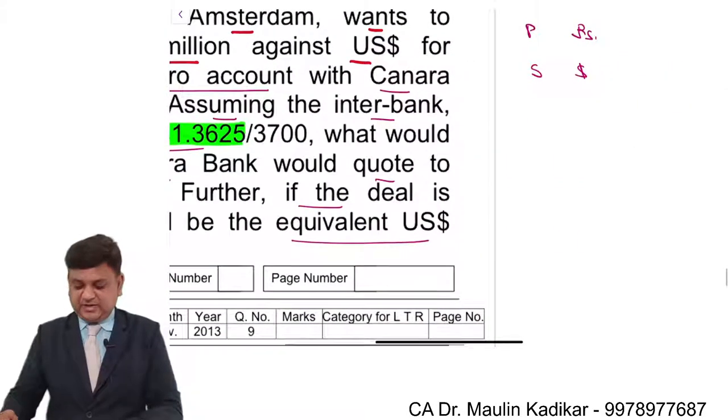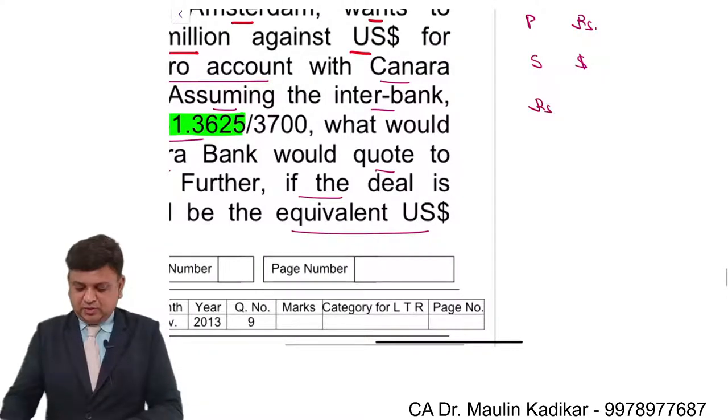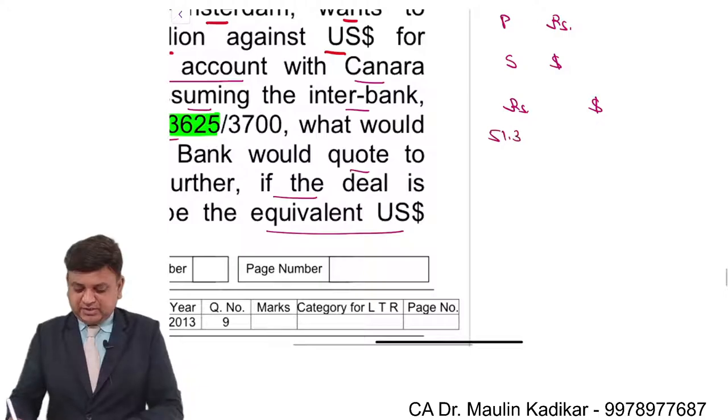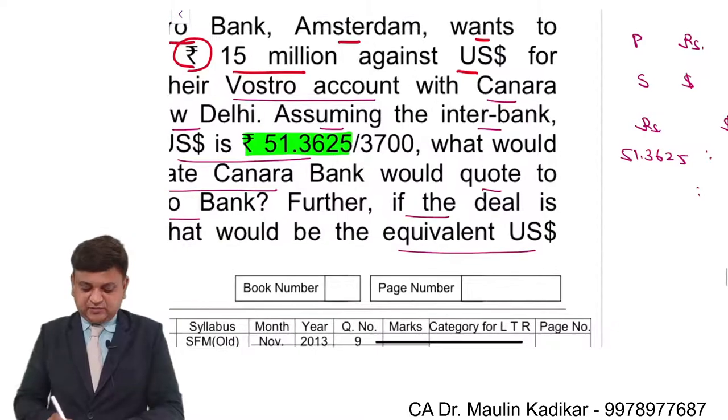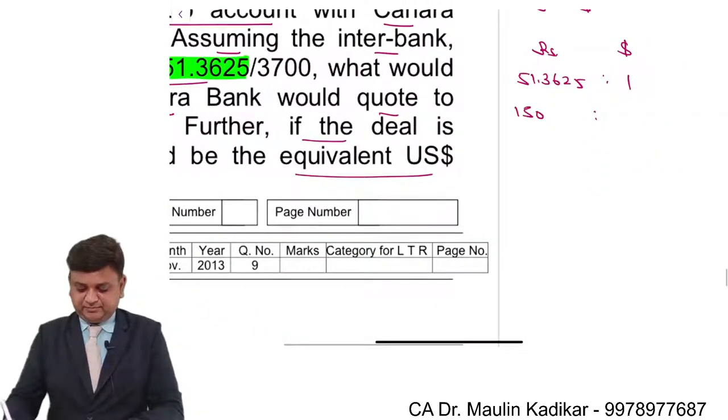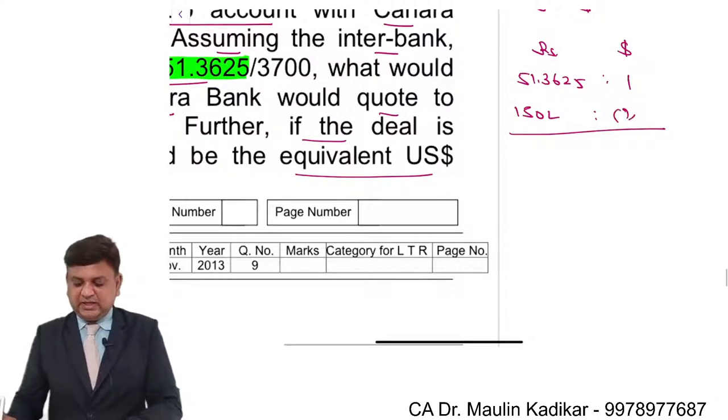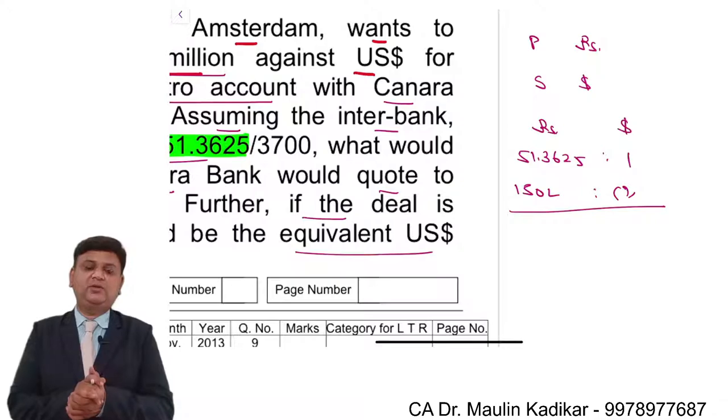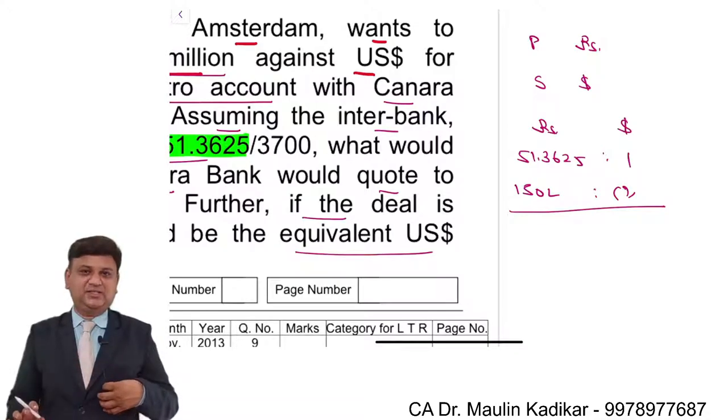The answer is very simple. First of all, rupees and dollar: 51.3625 rupees is equal to one dollar. The amount of rupees is 15 million, that is 150 lakhs. We need to compute the amount of dollar for this transaction.